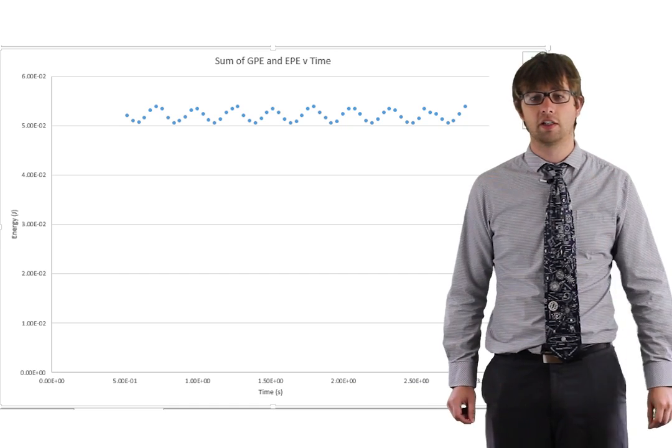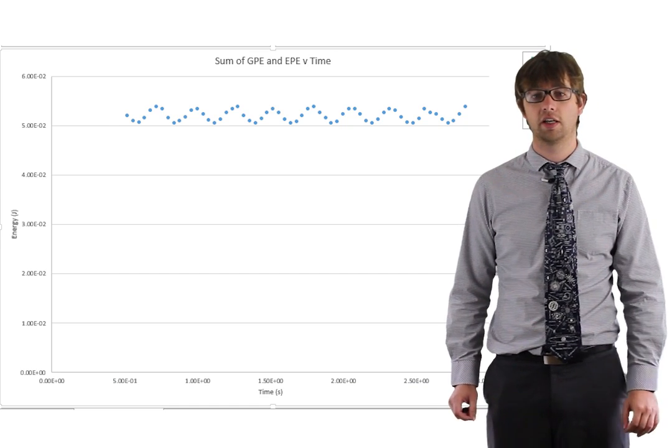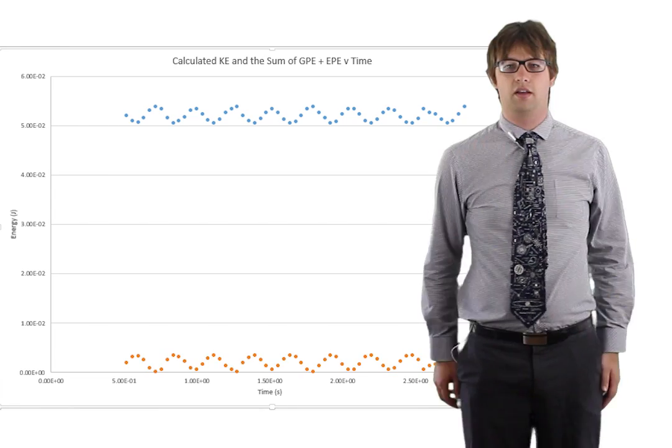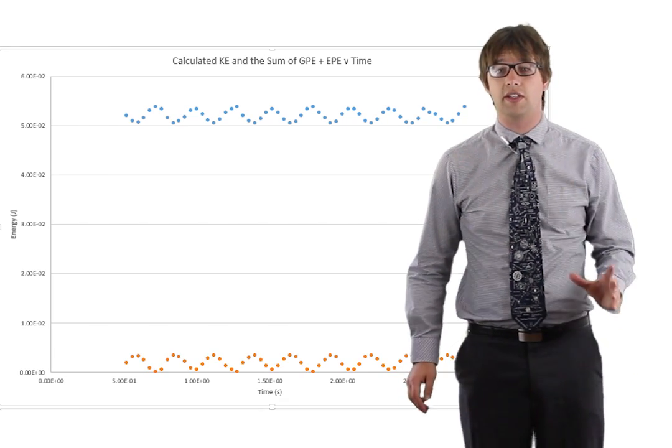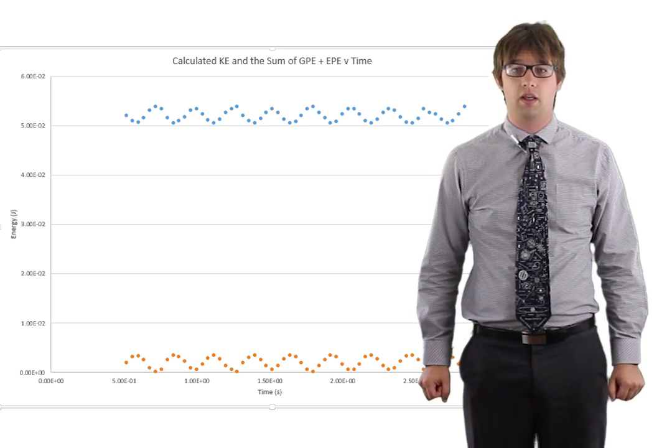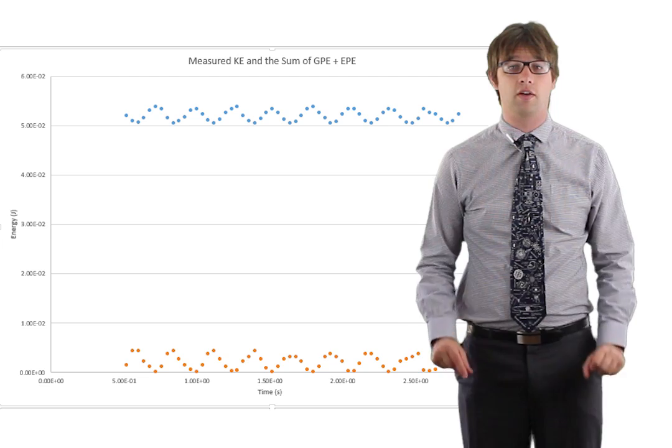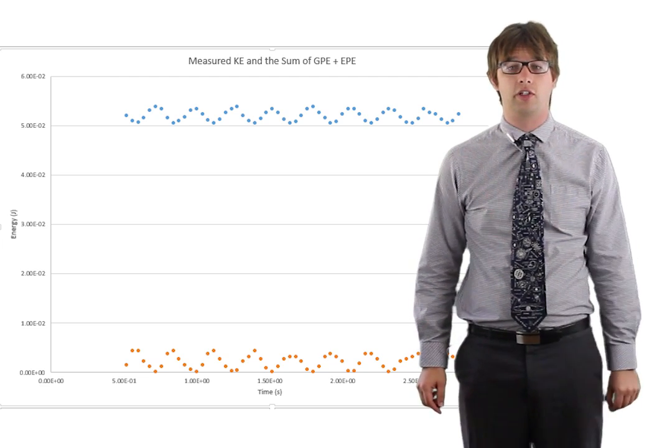You can use this information to find the gravitational potential energy and the elastic potential energy stored in the spring. You can then use this data to calculate the kinetic energy. Then compare the data to what your tracking software calculates the kinetic energy to be.